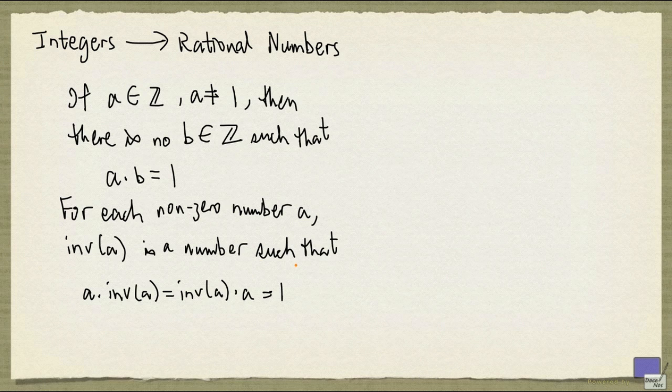Note that we're not going to define the inverse of 0 because it leads to problems as mentioned in another video. And you can now think of inverse as a unary operation.